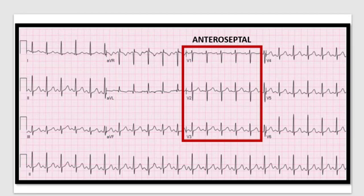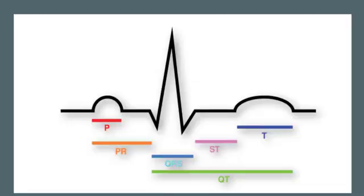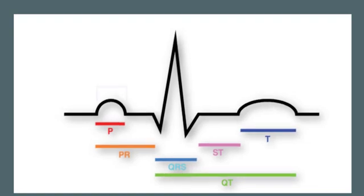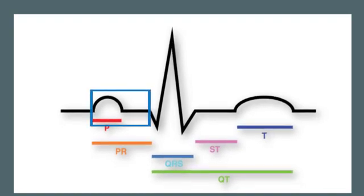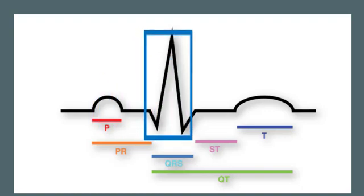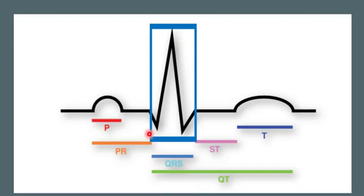Now moving on to the individual QRS complex and its components. The P wave represents atrial depolarization or contraction. The PR interval represents the time taken for the electrical impulse from the SA node to pass through the atria and reach the AV node — it is 0.12 to 0.2 seconds, which is 3 to 5 small squares on the ECG strip. The QRS complex represents ventricular depolarization or contraction. The first downward deflection after the PR segment is the Q wave. Deep Q waves are seen in evolved or old myocardial infarction.